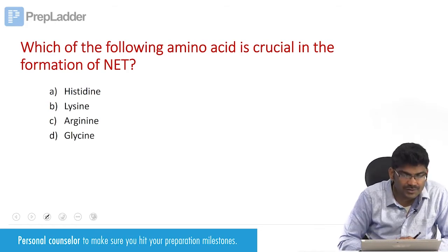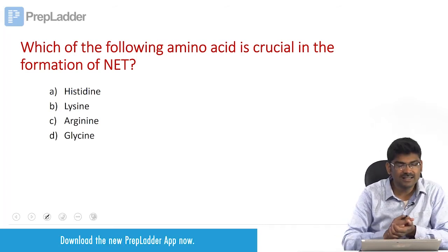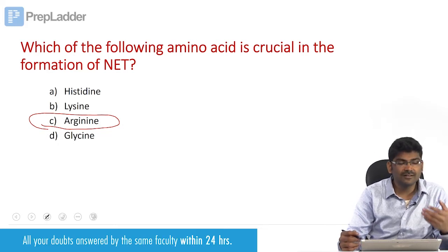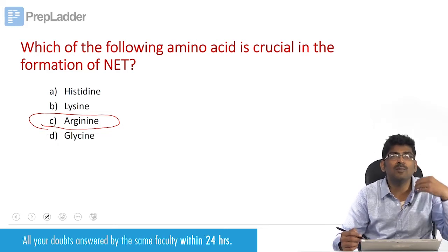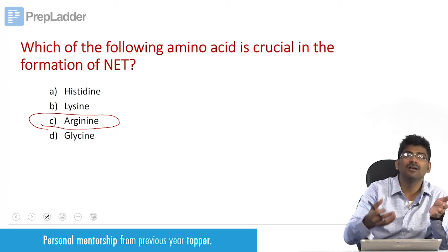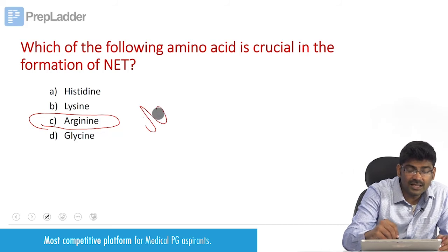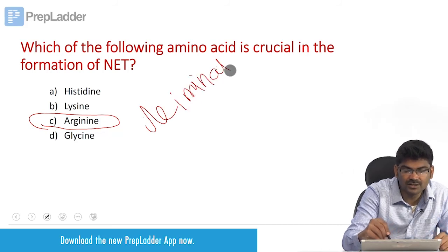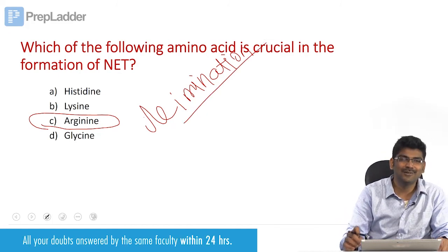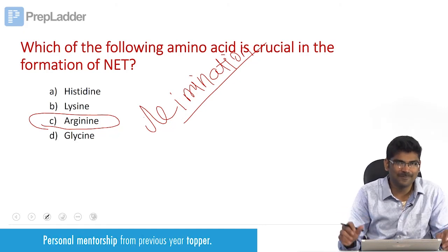This is a past question: which of the following amino acids is crucial in the formation of NETs? The answer is arginine. In future, they can ask which post-translational modification is involved in the formation of NETs — options like deamination, de-imination, hydroxylation, or acetylation. The answer will be de-imination. That is why I showed you the structure in detail. With this, we complete neutrophil extracellular trap. Thank you.